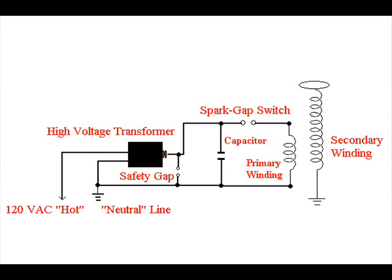To have a resonant circuit, we need capacitive reactance and inductive reactance to be balanced. Therefore, we need just the right spark gap setting to allow the capacitor to charge and discharge at the right frequency. We also need the right amount of inductance and the right amount of capacitance.